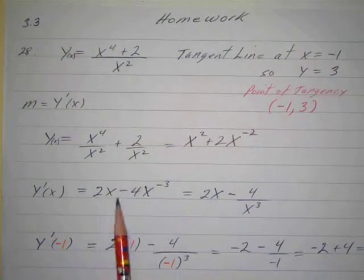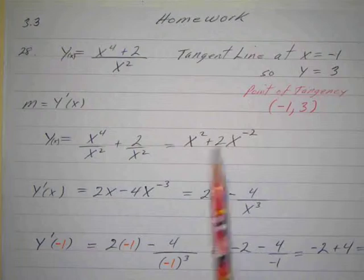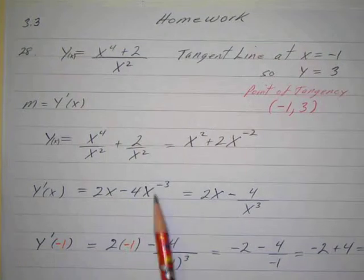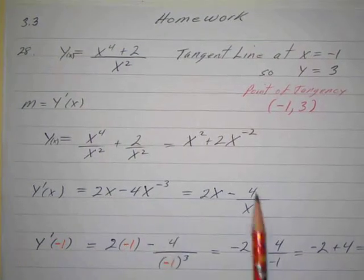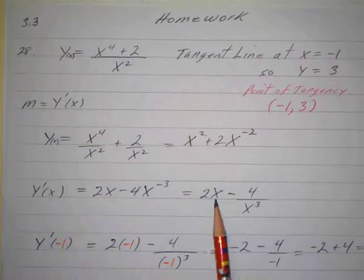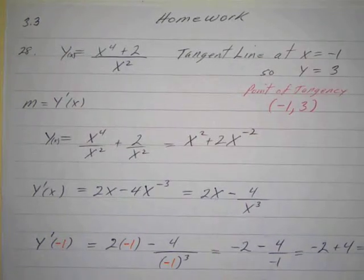So the derivative is going to be 2x, power rule, and then negative 2 times 2 is negative 4, times x to the, and then 1 less than 2 is negative 3. Then I can put this on the bottom so I can evaluate it, so I've got the derivative is equal to 2x minus 4 over x to the third.